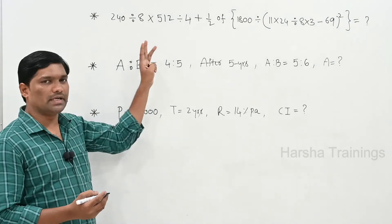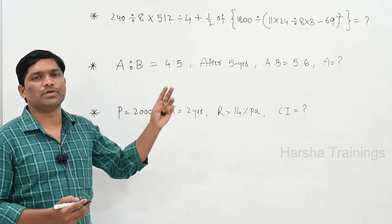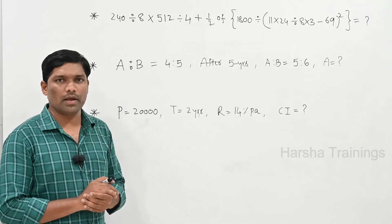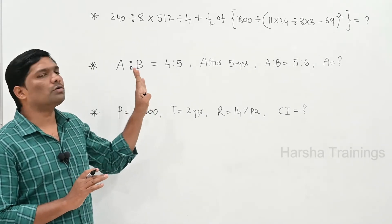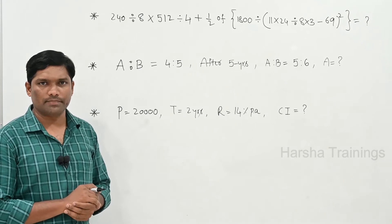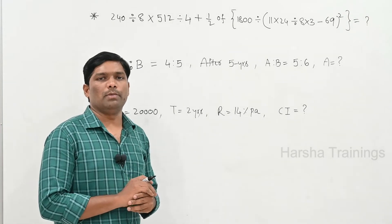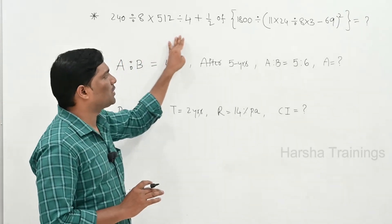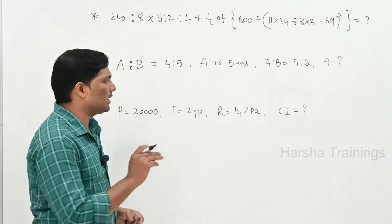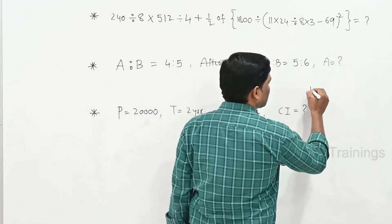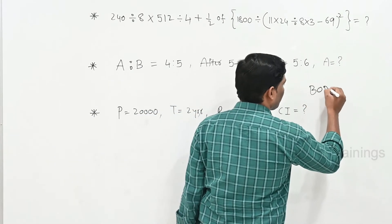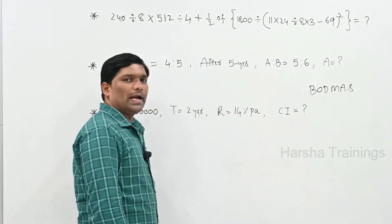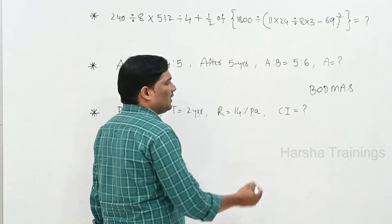If you solve this problem with a calculator, it will definitely take two to five minutes. But we need to solve this problem without a pen — clearly observe the problem. In anti-simplification problems, we solve them using board BODMAS rules, and we will use those rules to solve it.